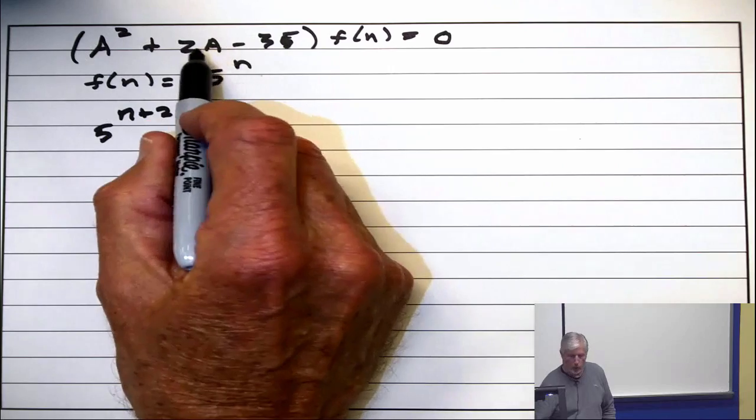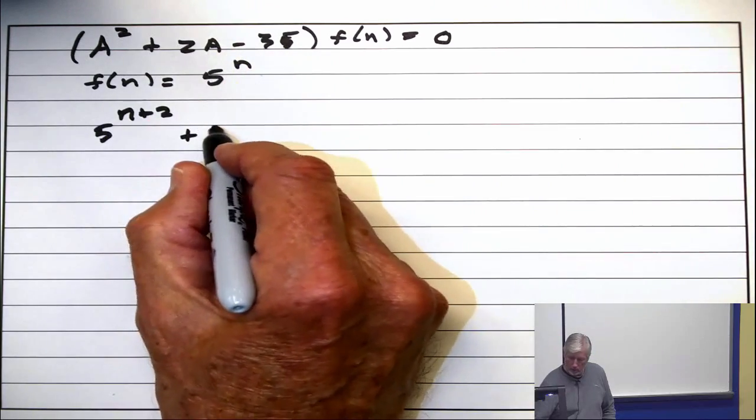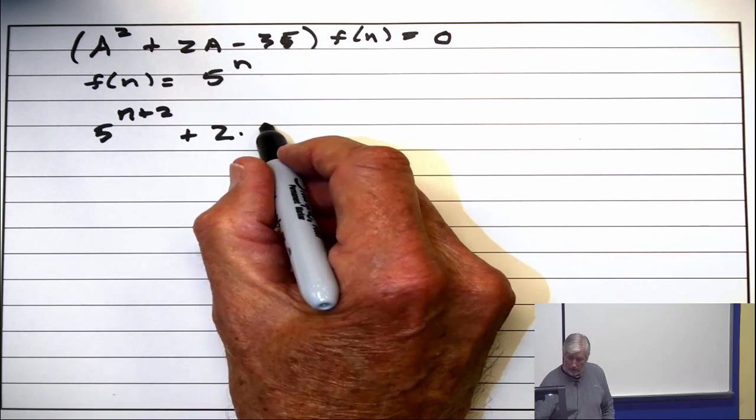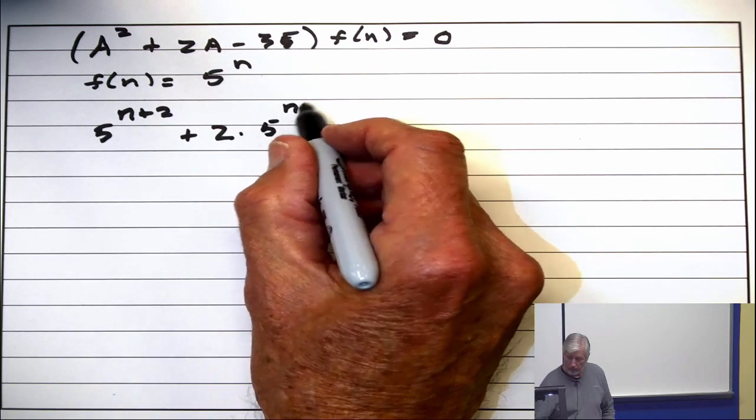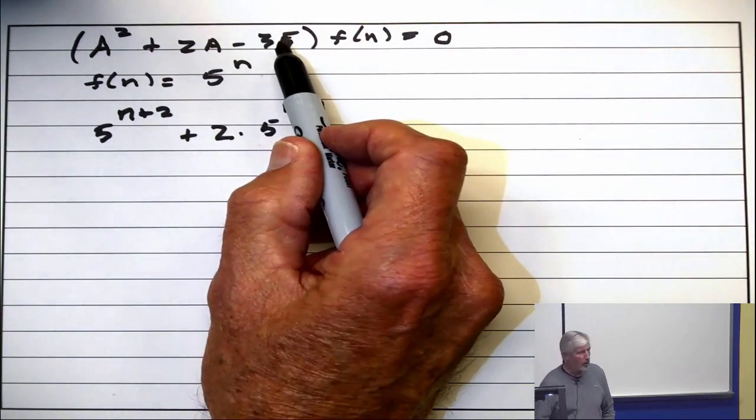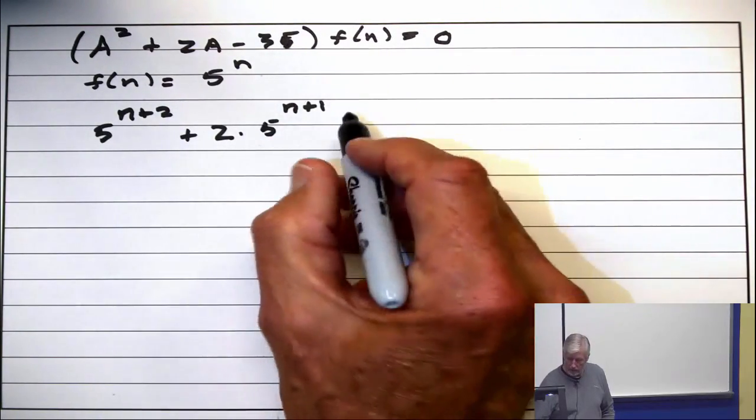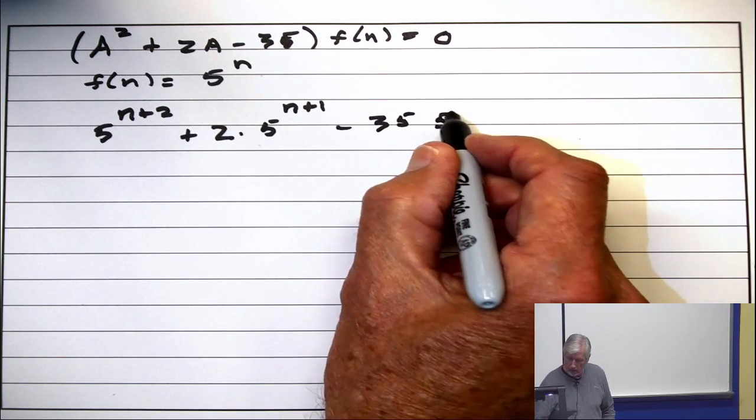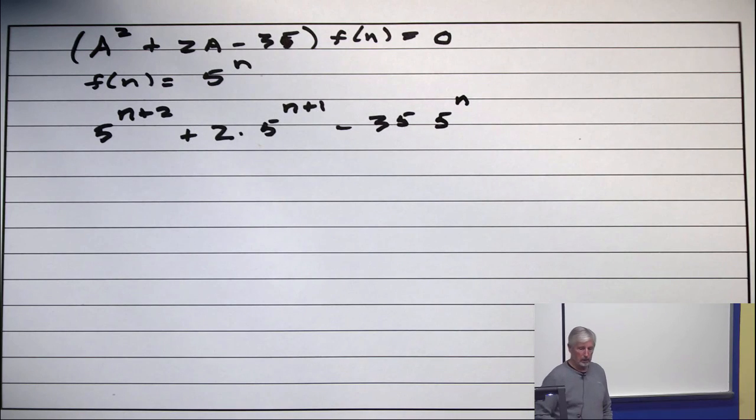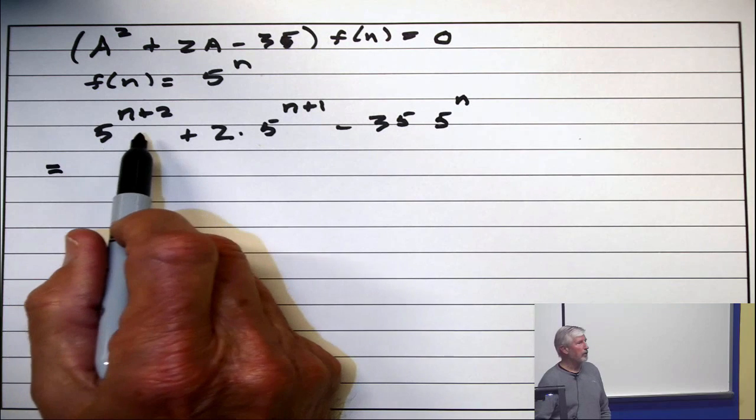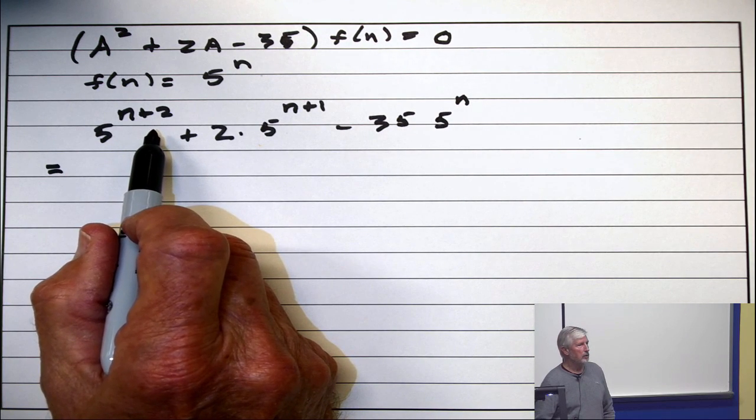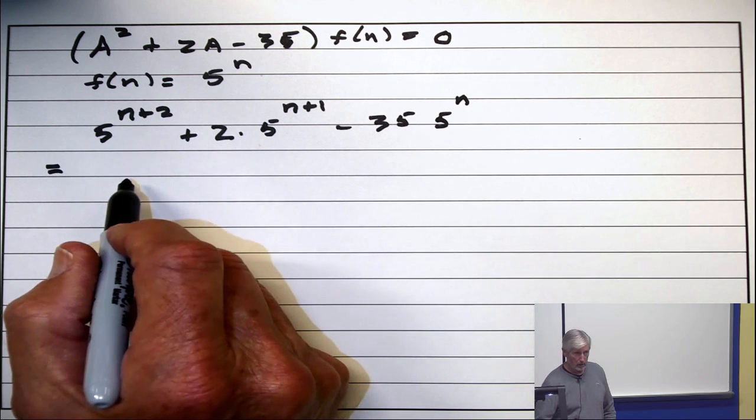Now, apply twice the advancement operator. That's 2 times 5 to the N plus 1. Now, subtract 35 times 5 to the N. What is that? Alright. 5 to the N plus 2 is 5 squared times 5 to the N. Agreed?